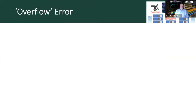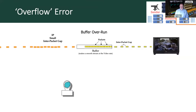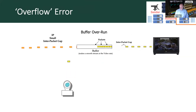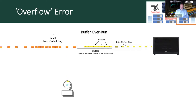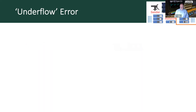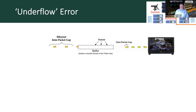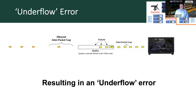You'll hear the term overflow error. In simplistic terms, it means you're flooding the buffer — there are too many packets and they can't drain out, so packets are lost. In the world of IP video, we cannot afford to lose packets. The other term is underflow error, which is when the packets arriving in the buffer result in the buffer emptying and being starved of data, so it has nothing to pass on to the receiver — again causing a quality of service issue.